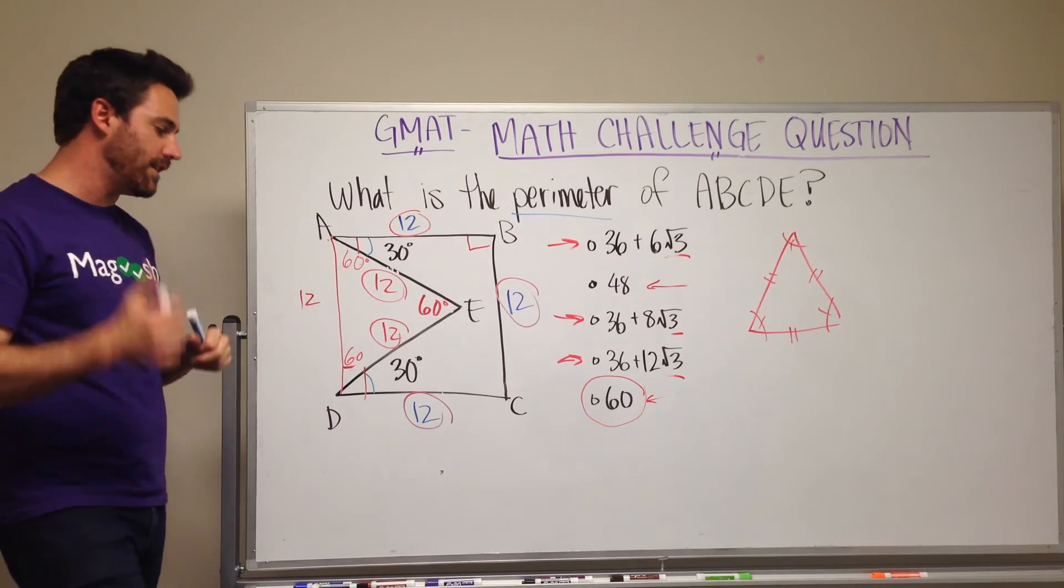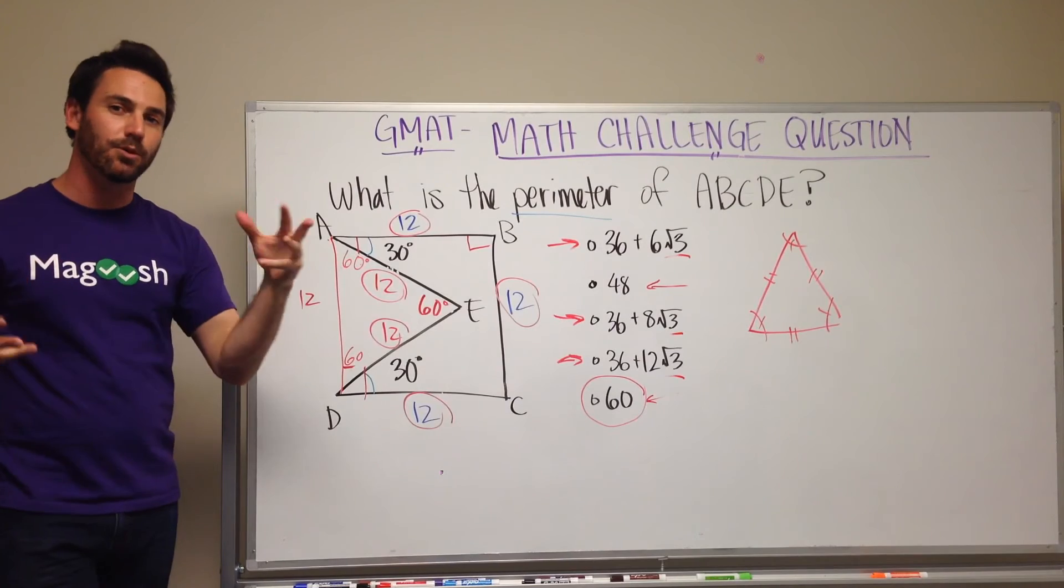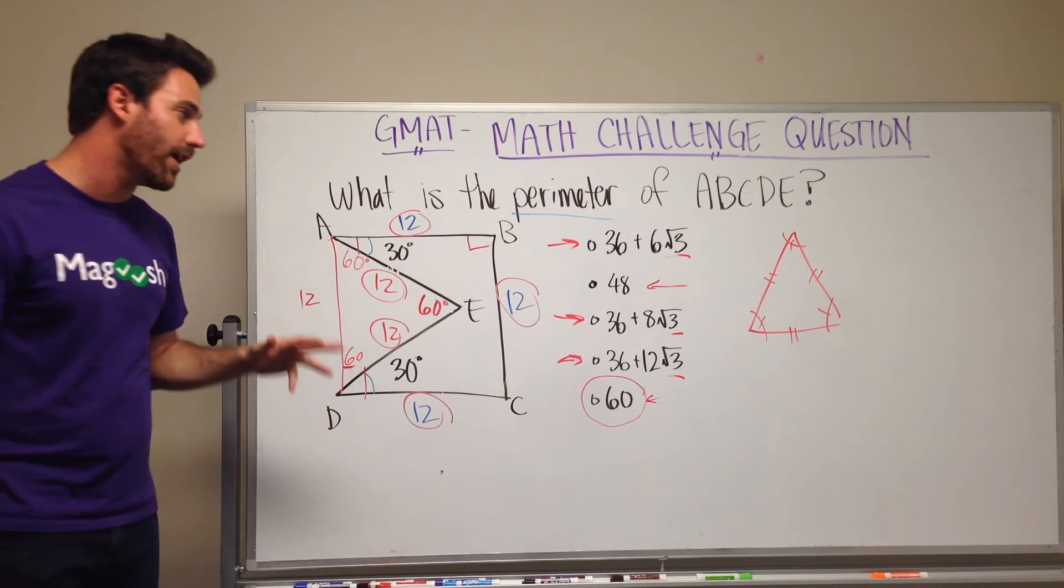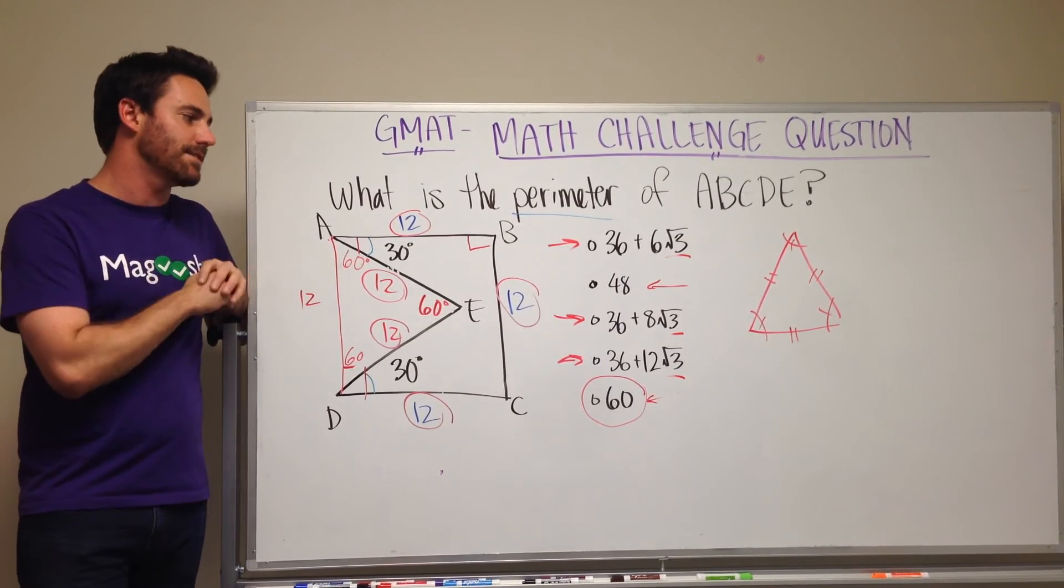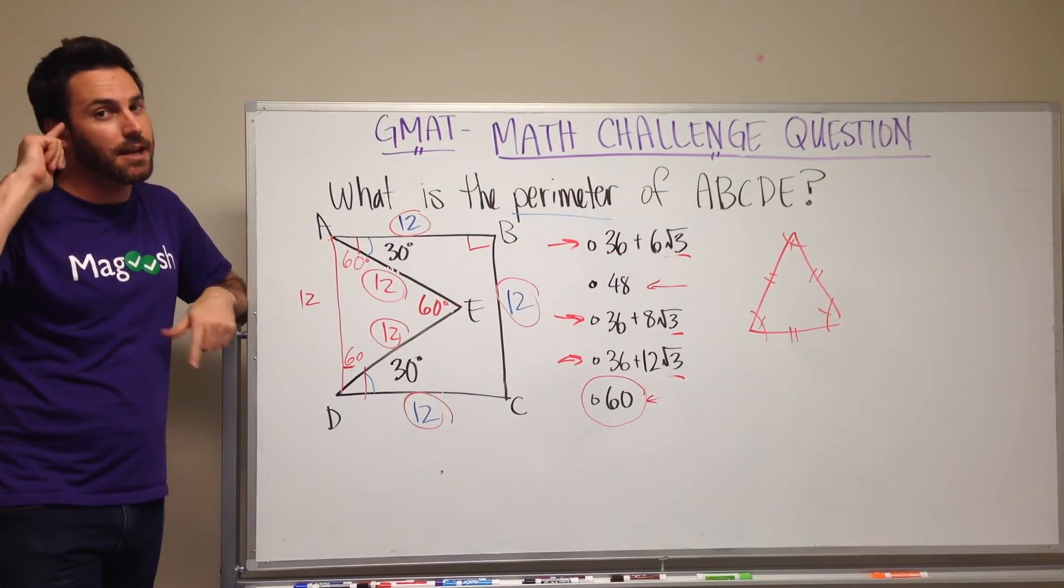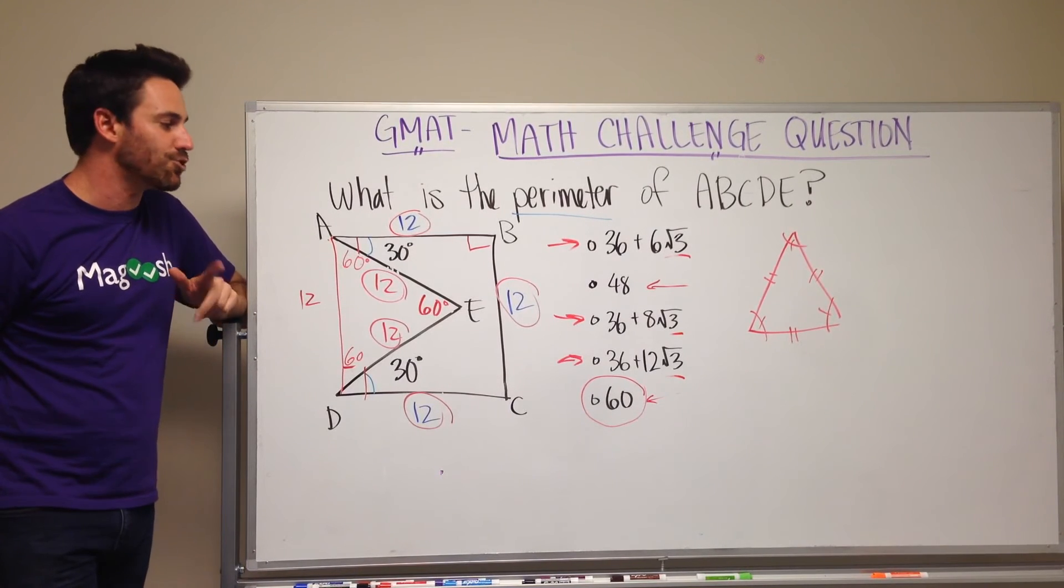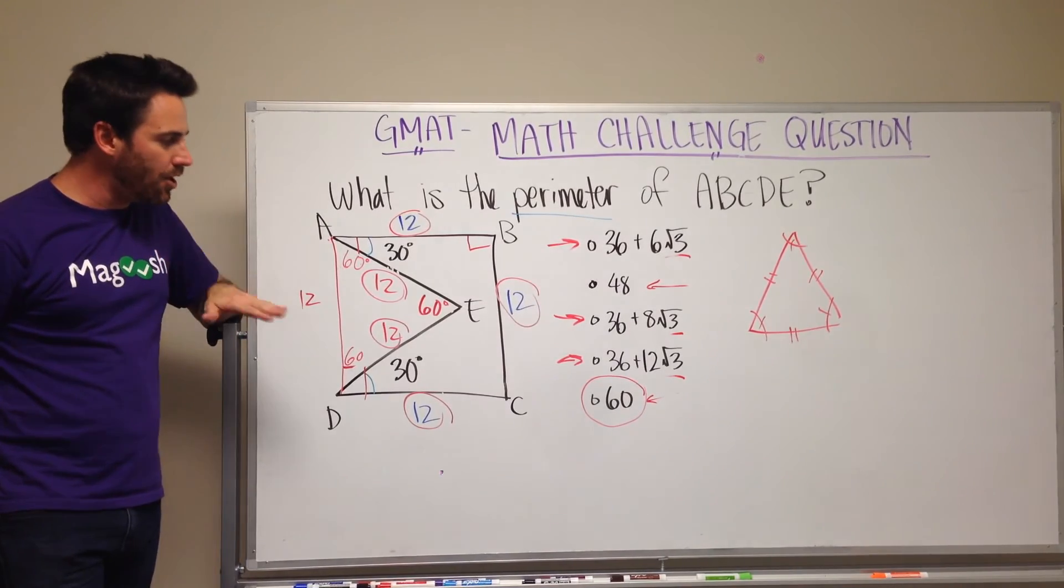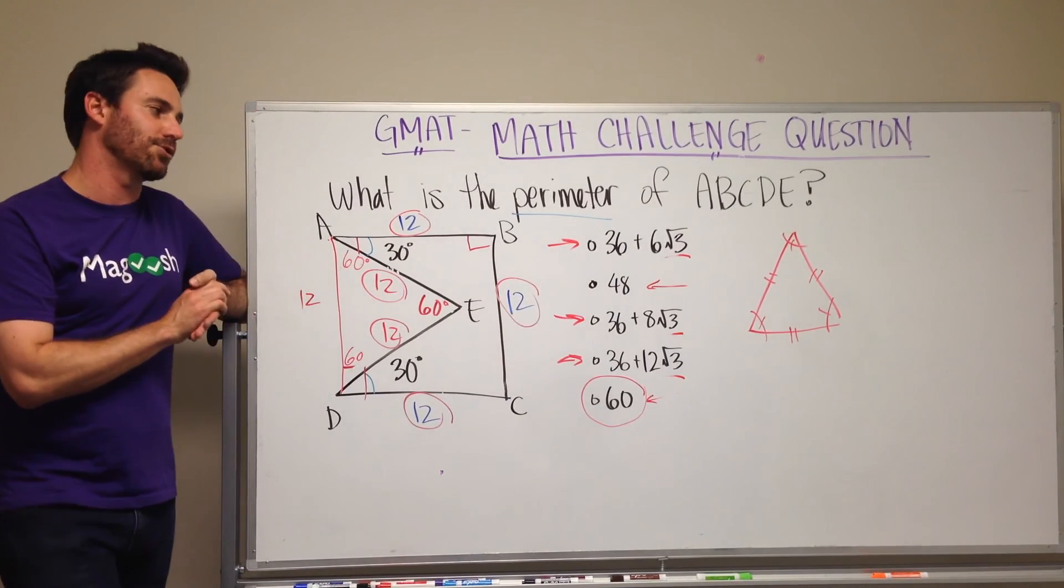So a couple takeaways here. One, the GMAT always rewards students who feel comfortable with these special triangles, with equilateral triangles, 30, 60, 90 triangles. Also, another takeaway is that the answer choices might be misleading. You might come in here, like I was saying, see the radical 3 and think immediately 30, 60, 90. And that is actually being set as a trap for us. So know your triangles, know your squares, and don't be distracted by the answer choices.